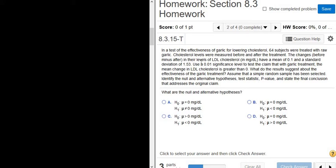Hey everyone, in this problem we have a hypothesis test for a population mean. It says in a test of the effectiveness of garlic for lowering cholesterol, 64 subjects were treated. That's going to be our sample size. So n is equal to 64.